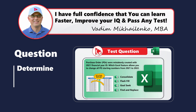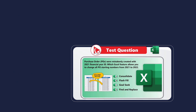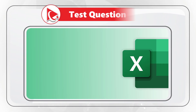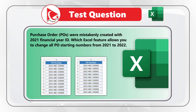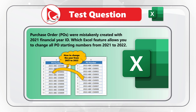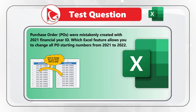Here's an amazing question to test your knowledge of Microsoft Excel features. Purchase orders (POs) were mistakenly created with a 2021 financial year ID. Which Excel feature allows you to change all purchase order starting numbers from 2021 to 2022? The four choices are: choice A, Consolidate; choice B, Flash Fill; choice C, Goal Seek; and choice D, Find and Replace.